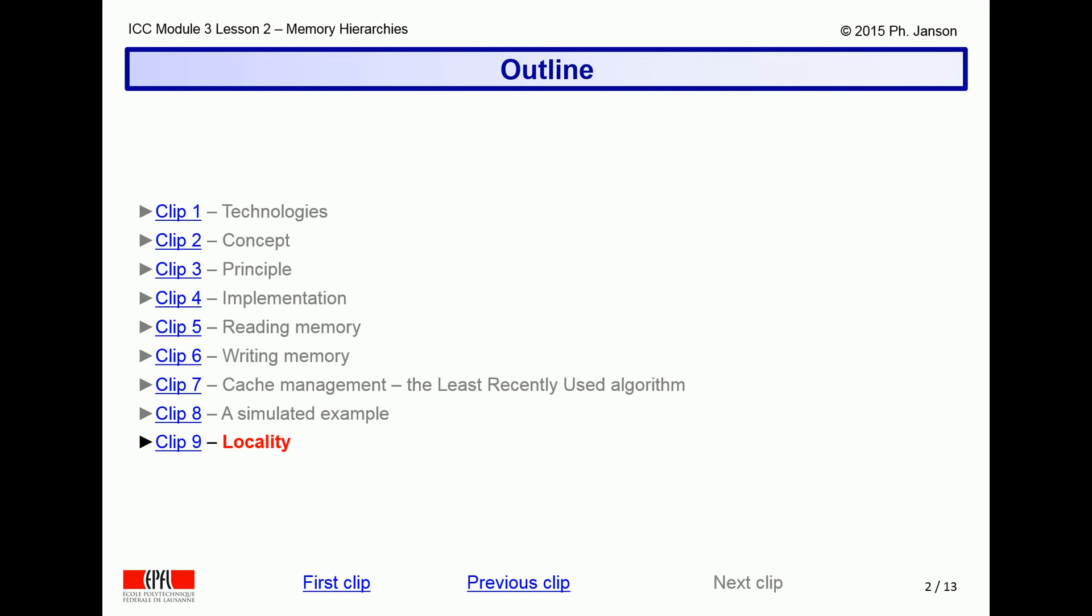It explains the phenomenon called locality that the least recently used algorithm depends on, in its implicit hypothesis, that a least recently used block may be ejected from a cache memory because it is also the one that is least likely to be needed in the future. Without LRU and locality, managing a hierarchical memory or storage system efficiently would be totally impossible. The processor would spend most of its time waiting for information to come from lower and slower levels of memory and storage.